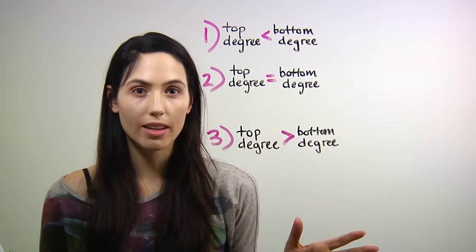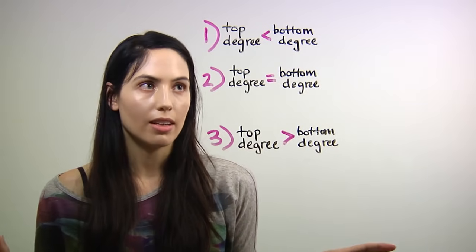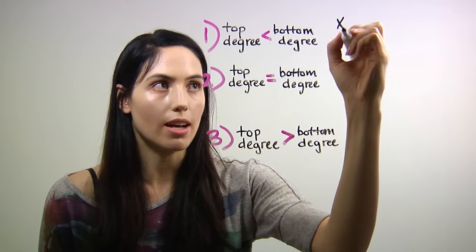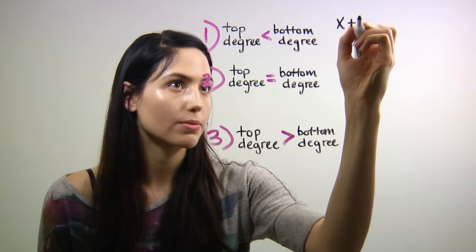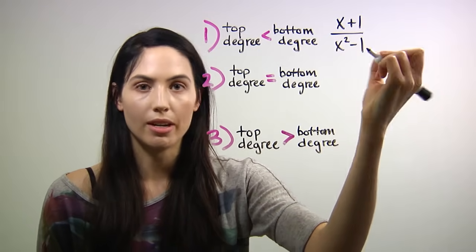Okay, so this is a trick to know the horizontal asymptote. It's a rule that you can use. So the first case, what if your degree on top is less than your degree on the bottom?